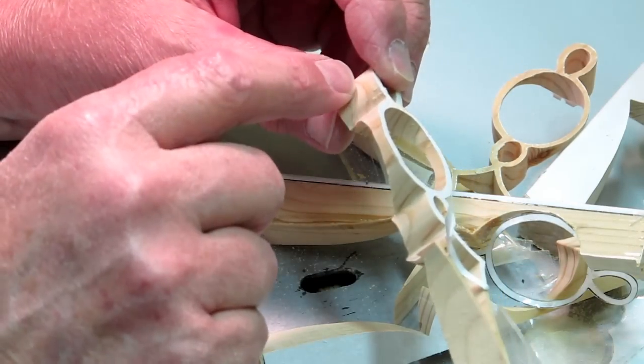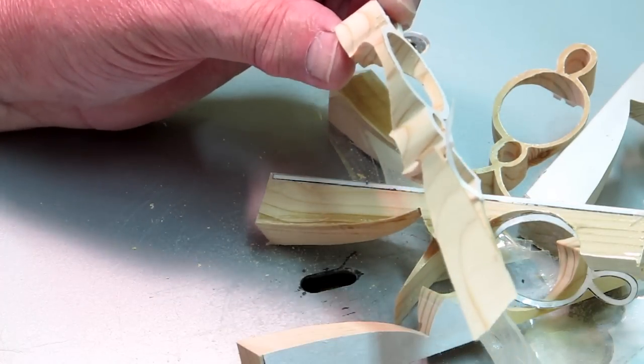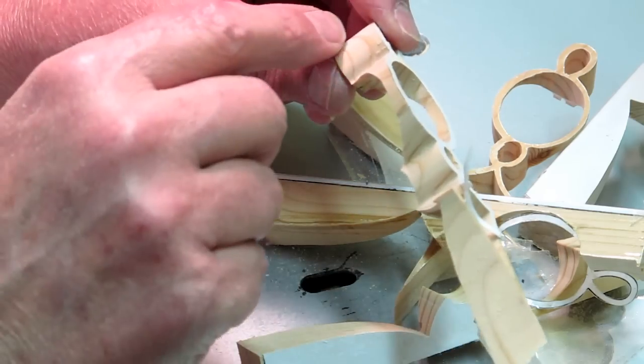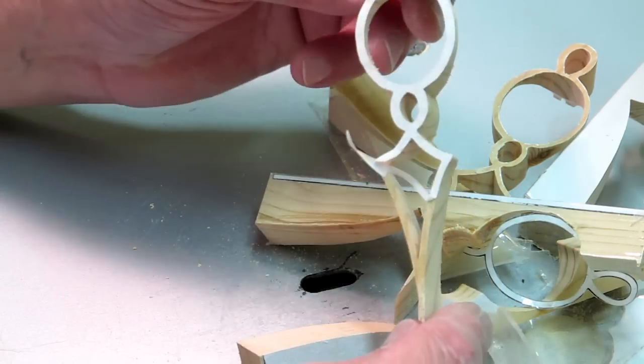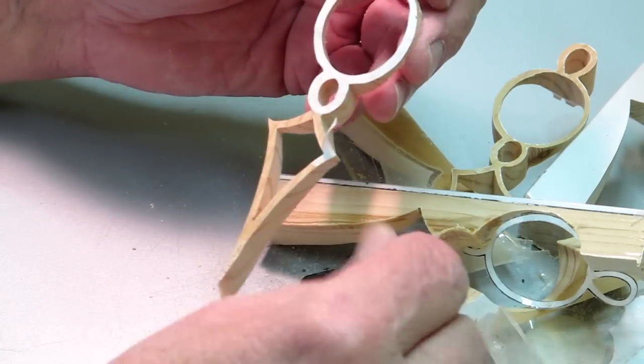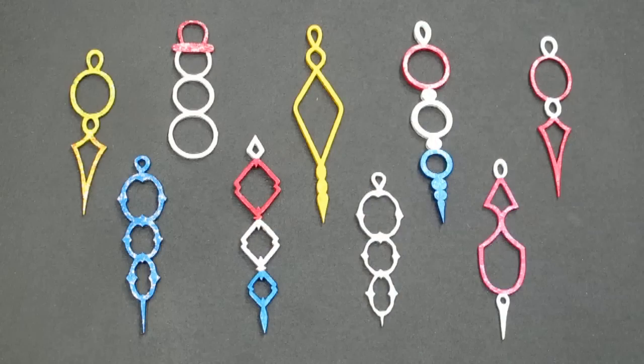You can take this on a belt sander, a disc sander, keeping track of your fingers, and sand that down to an even thickness and you can actually make another ornament out of this. Examples of flat ornaments made from the scrap pieces.